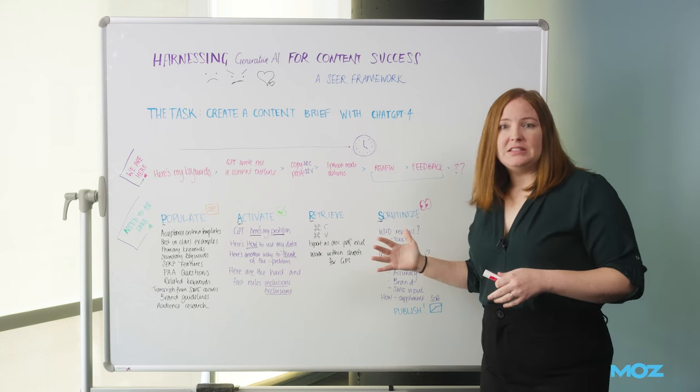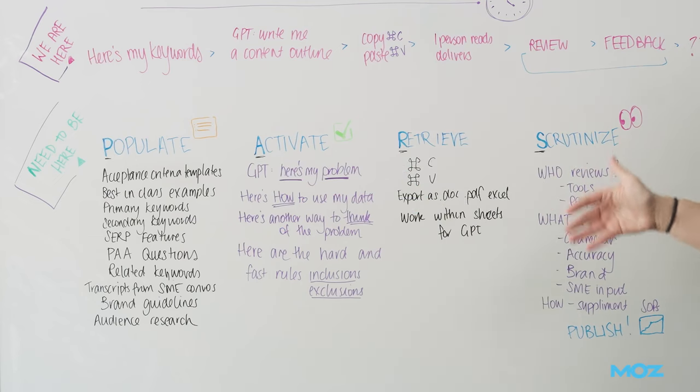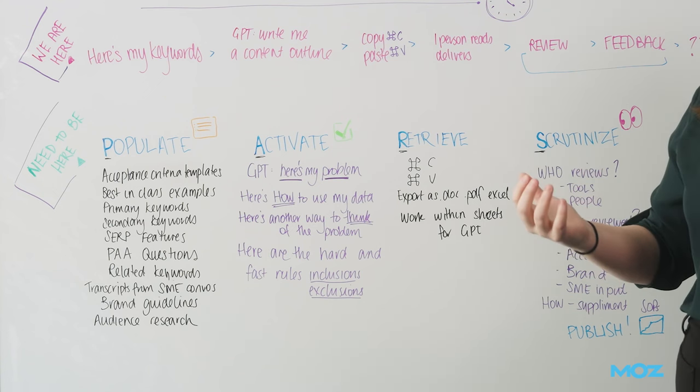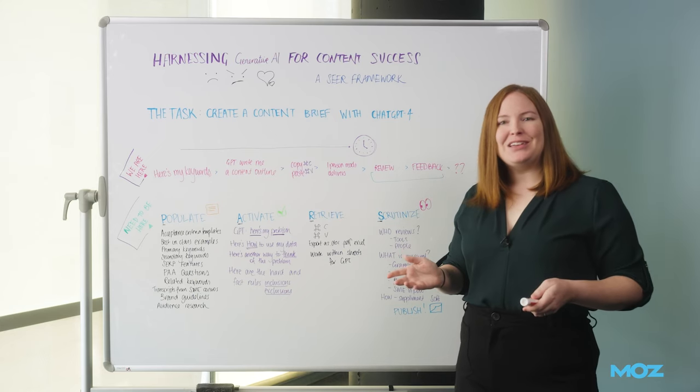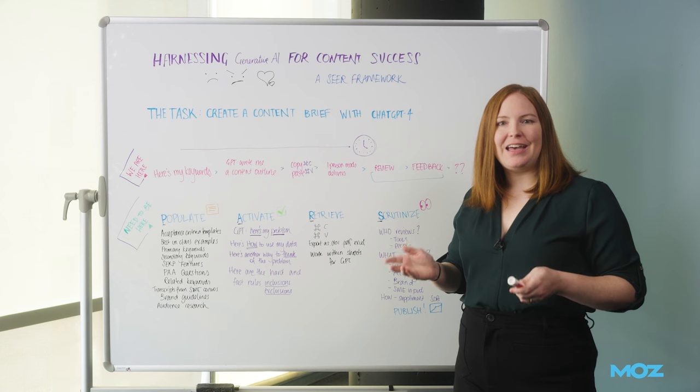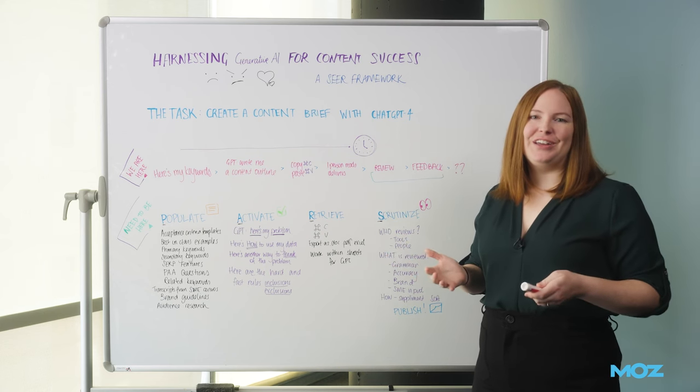And so that is the process. That's PARSE: populate, activate, retrieve, and scrutinize. And this is a process, again, that you can use to leverage generative AI for SEO and content in a way that is both safe but also effective. So thank you for spending your time here with me today. For more ideas like this, please follow us on the Seer newsletter. Thanks.